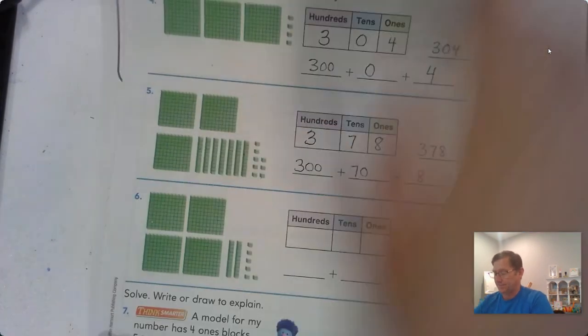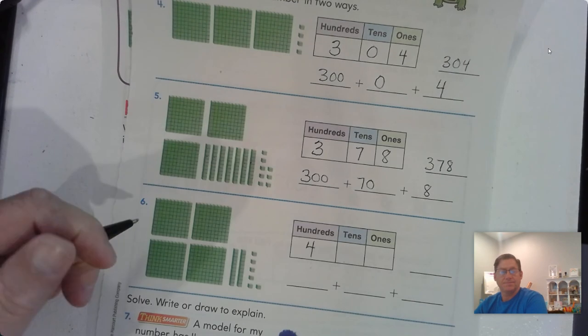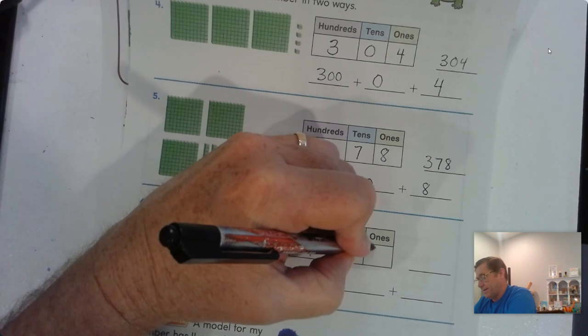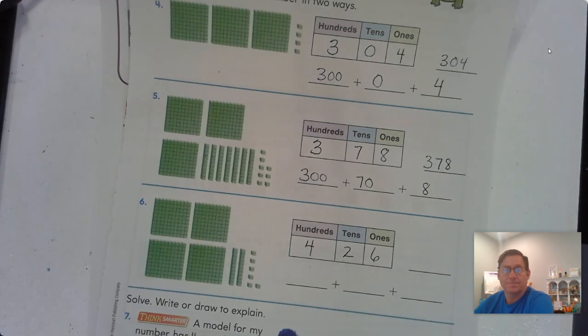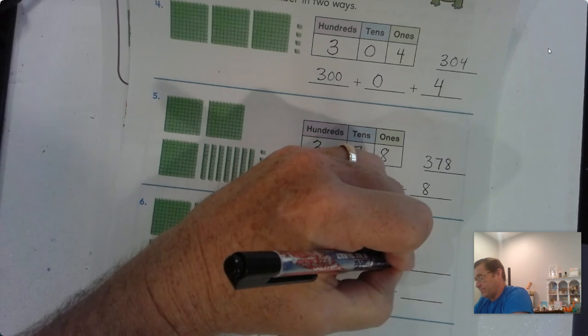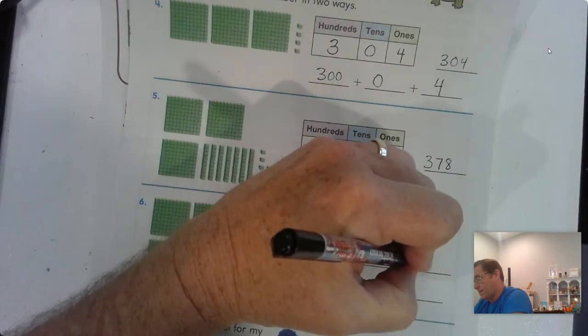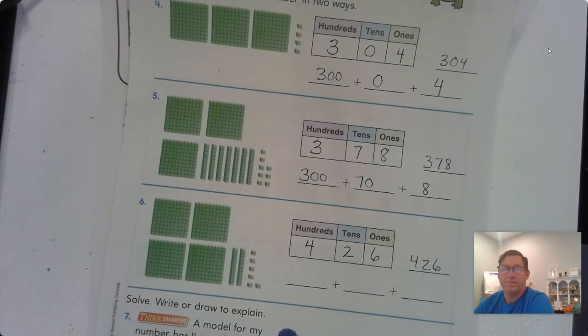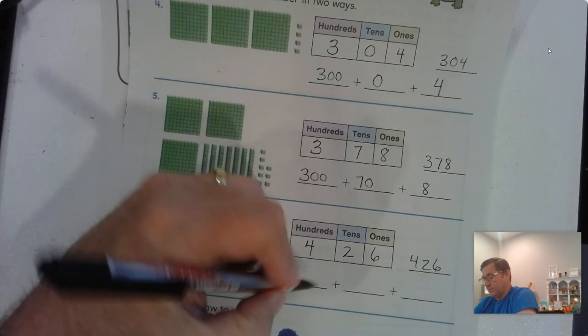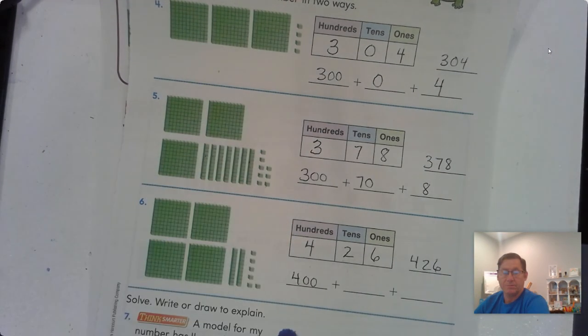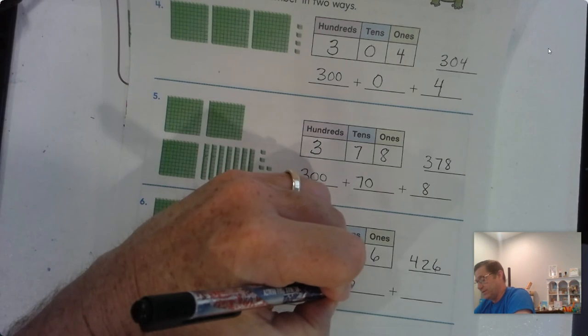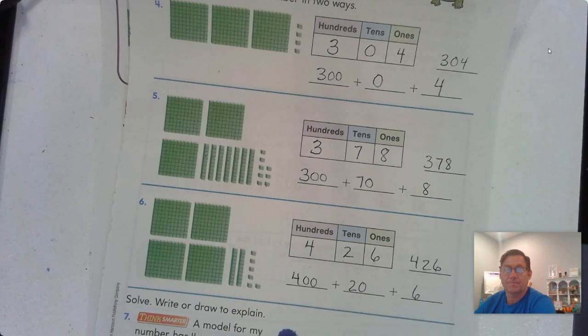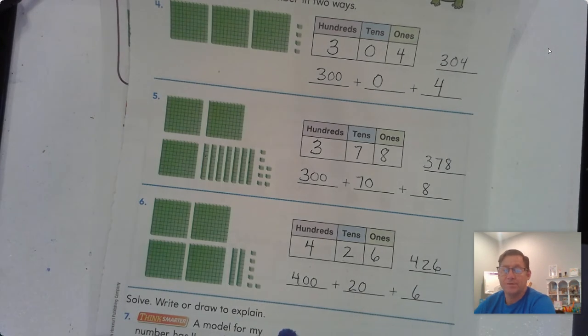Number 6. This time I see 4 hundreds, I see 2 tens, and 6 ones. So how do we write that? We'd have a 4 in the hundreds place, we'd have a 2 in the tens place, and we'd have a 6 in the ones place. 426. So 4 hundreds would be written as the number 400, 2 tens is written as 20, and 6 ones is written as 6. Four hundred twenty-six.